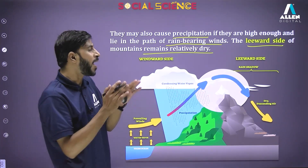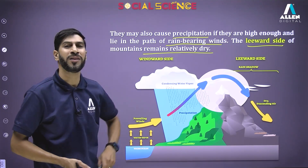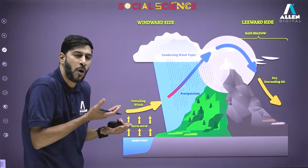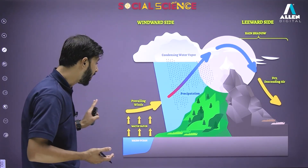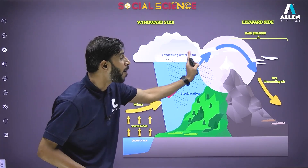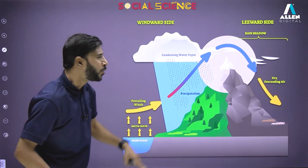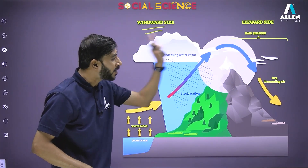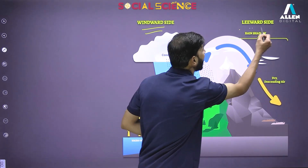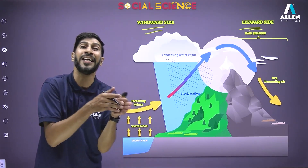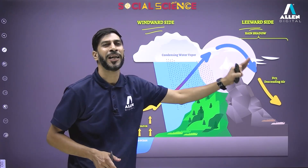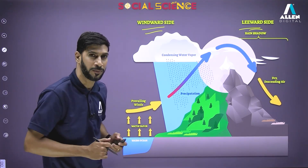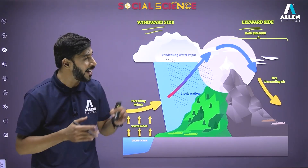The leeward side of the mountain remains relatively dry. Looking at this diagram: warm oceans generate winds carrying moisture, which cannot pass over the mountain and so it rains on the near side — this is called the windward side. The other side of the mountain, called the leeward side, is dry and is also known as the rain shadow area — it receives no rainfall. This is the importance of relief features in determining climate, and that covers all the climatic controls discussed in this lecture.